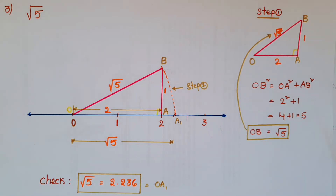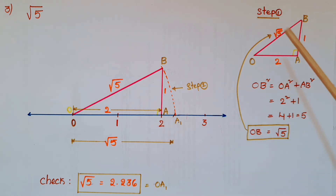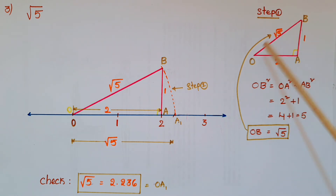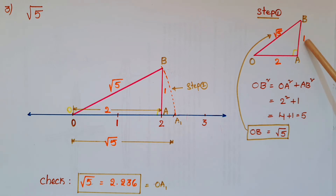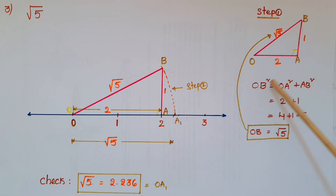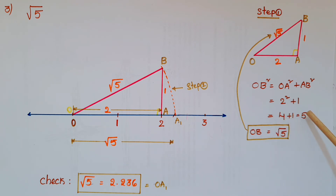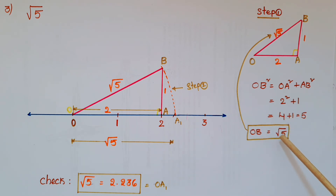Now I will show how to represent root 5 on the number line. Consider right angle triangle OAB where OA is 2 units and AB is 1 unit. By Pythagoras theorem: OB squared equals OA squared plus AB squared, which is 2 squared plus 1 squared equals 4 plus 1 equals 5. So OB equals root 5.